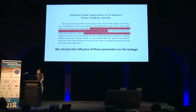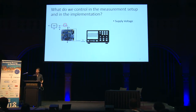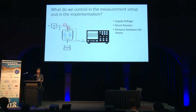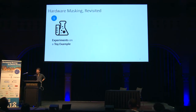But why stop at that small list? We can look at our measurement setup, which is based around the Sakura-G FPGA, and list other parameters we can control — both as an attacker and as a designer. These include the supply voltage, the shunt resistor over which we measure, the distance of the shares, temperature, circuit size, clock frequency, and finally the masking scheme order itself.